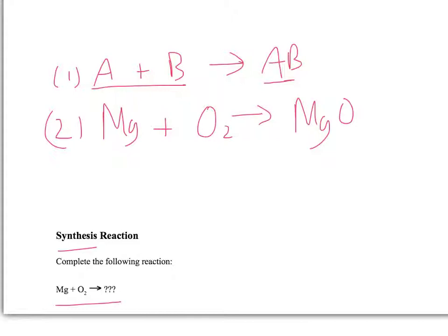We have to look at the oxidation states of Mg and O to determine if we need to do any crisscrossing. Magnesium, since it's a group 2 element, has a plus 2 charge. Oxygen, since it's group 16, has a minus 2 charge. After crisscrossing and reducing, we end up with MgO.